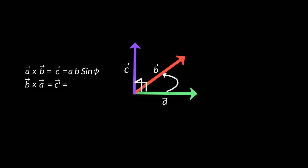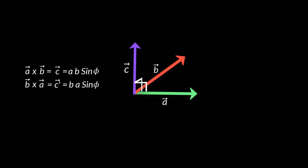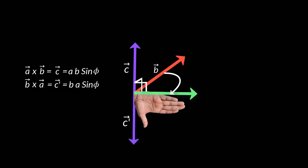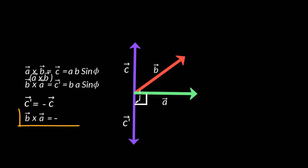Now if you are asked to find B cross A instead of A cross B, you can write it as BA sine phi. The magnitude of B cross A is the same as the magnitude of A cross B. But using the right-hand rule, sweeping from vector B towards vector A, the resultant vector C dash points downwards — opposite to vector C. So C dash equals minus vector C, which means B cross A equals minus of A cross B.